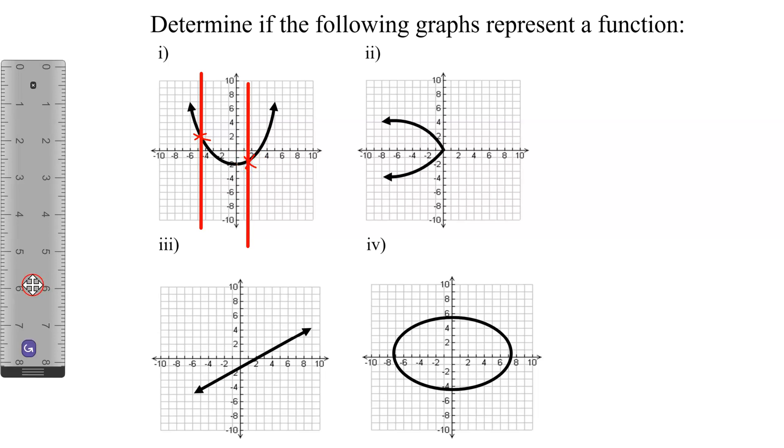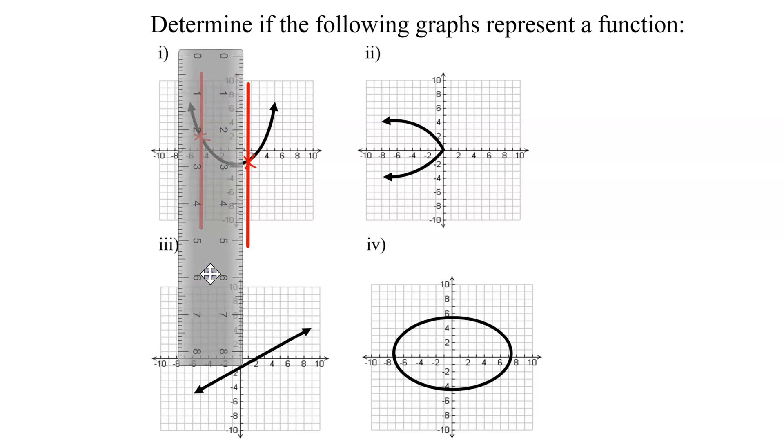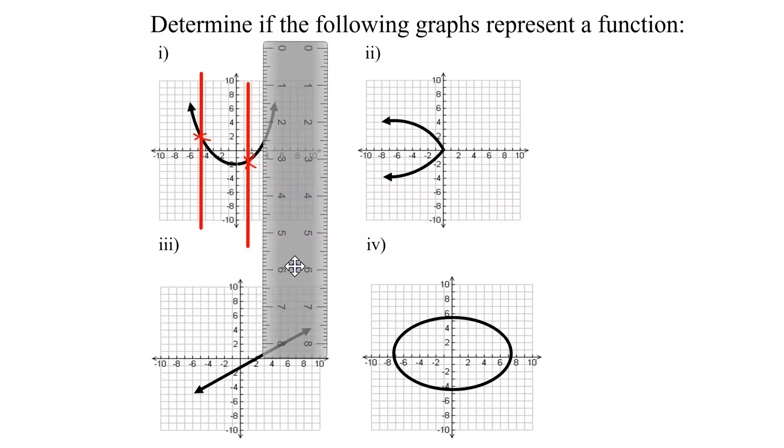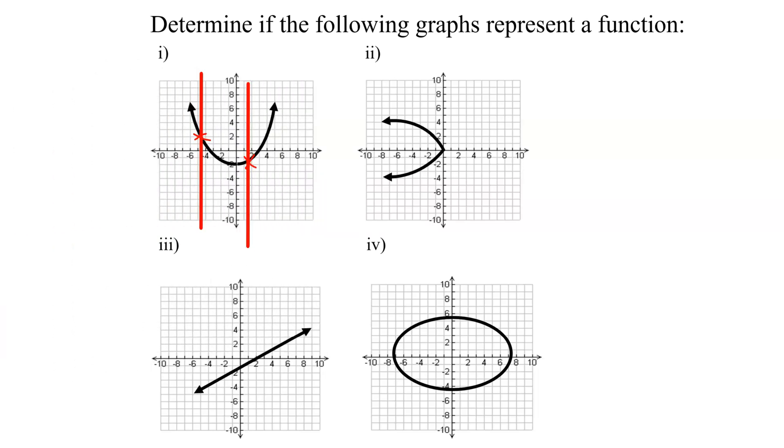So hopefully you can see, it doesn't matter where I stop my ruler and draw my vertical line, it's only going to cross the graph one time. Therefore, this graph represents a function.